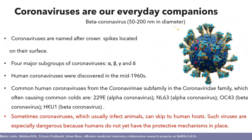I will start with coronaviruses, which are our everyday companions. They are named after their spikes located on their surface, and they are known for major subgroups. They were discovered in the 1960s and are really known because they cause common colds. But sometimes coronaviruses, which usually infect animals, can skip to human hosts, and this kind of virus can be really dangerous to humans because the mechanisms for protection are not yet in place.